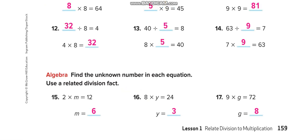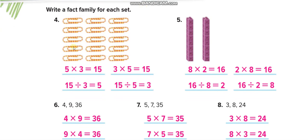Moving to the next page, you need to create a fact family from an array. The array has 3 columns and 5 rows. So: 5 times 3 equals 15, 3 times 5 equals 15, 15 divided by 3 equals 5, and 15 divided by 5 equals 3.